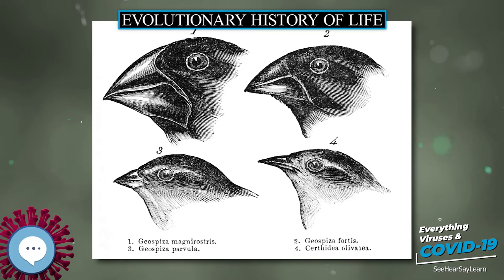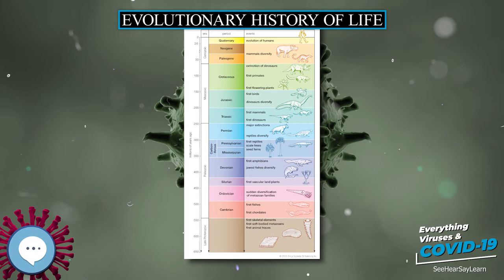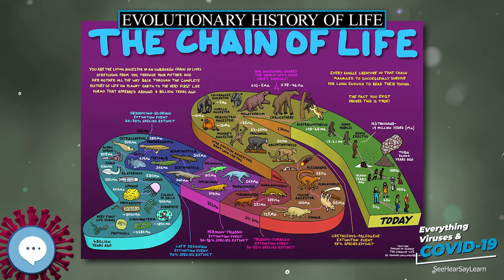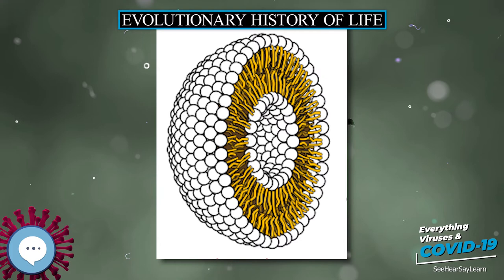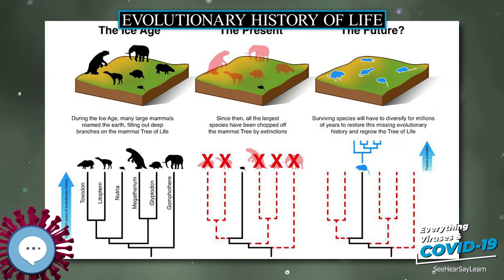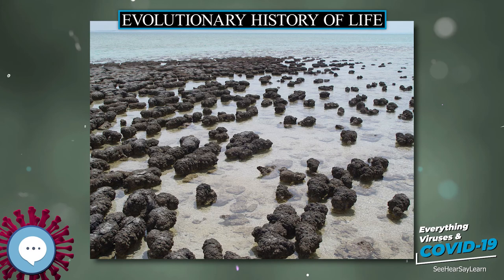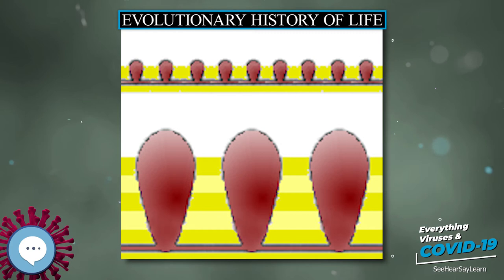Biologists reason that all living organisms on Earth must share a single last universal ancestor, because it would be virtually impossible that two or more separate lineages could have independently developed the many complex biochemical mechanisms common to all living organisms. Life on Earth is based on carbon and water. Carbon provides stable frameworks for complex chemicals and can be easily extracted from the environment, especially from carbon dioxide. There is no other chemical element whose properties are similar enough to carbon's to be called an analog.